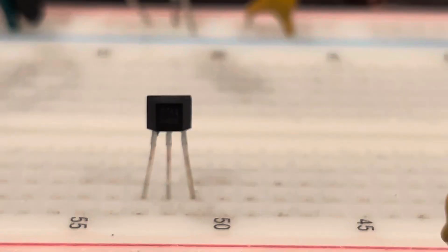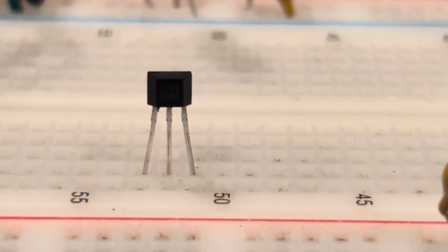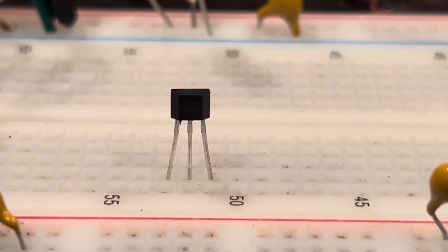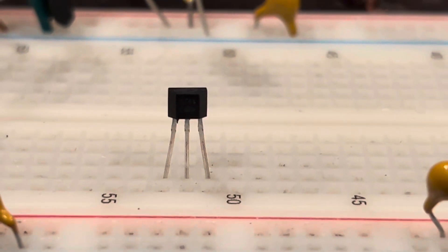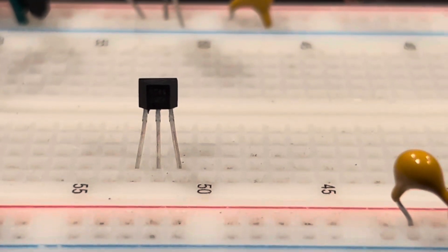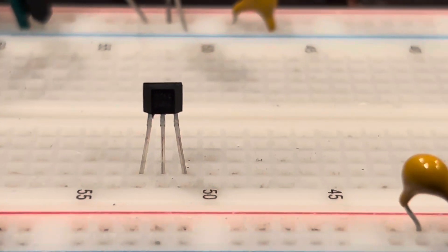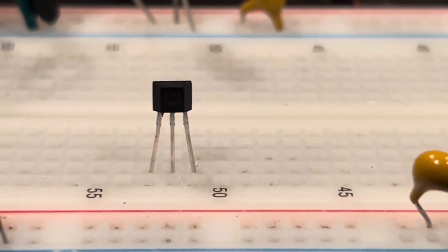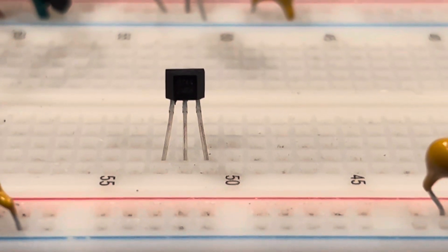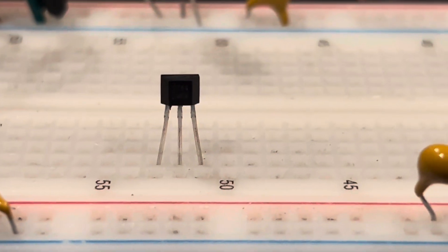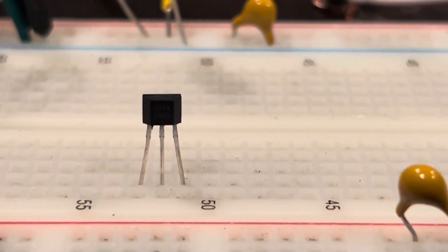This is an A3144 hall sensor, and it is a hall switch which means that it just turns on and off. It has basically a digital output, either on or off. Pin one on the left goes to five volts, pin two goes to ground, and pin three is the output. So let's see how we can put this circuit together.